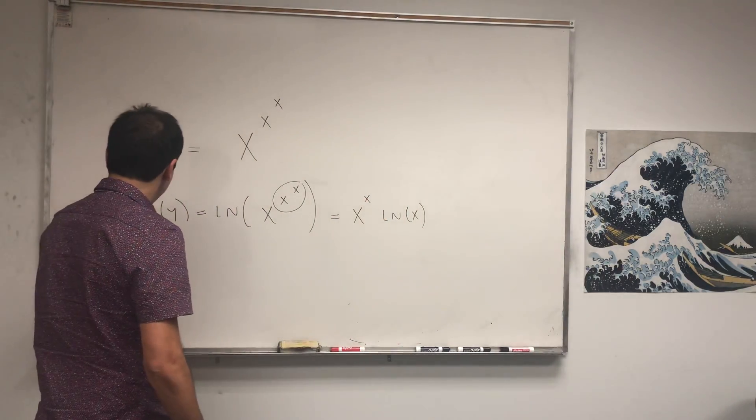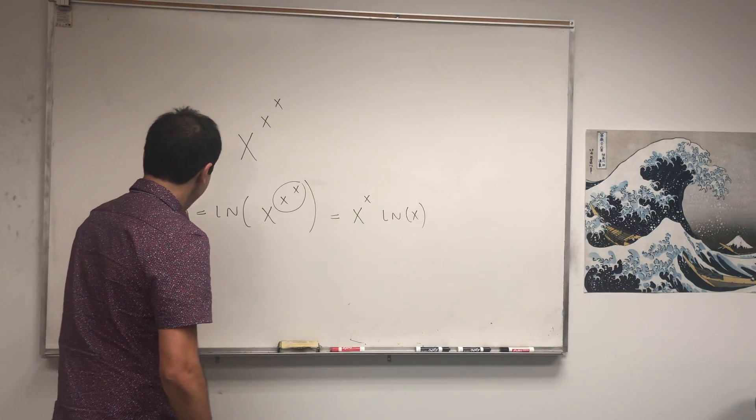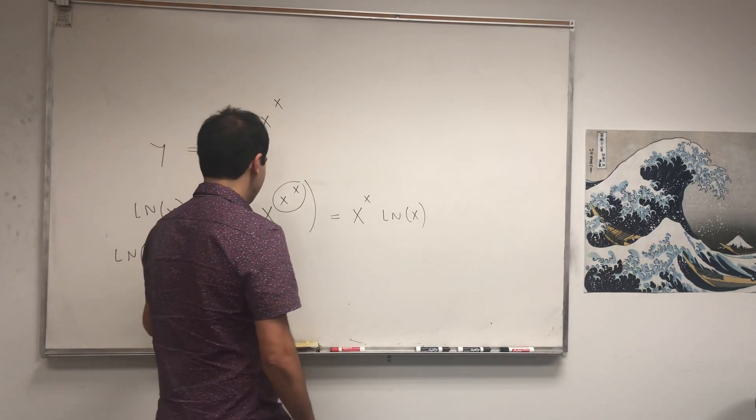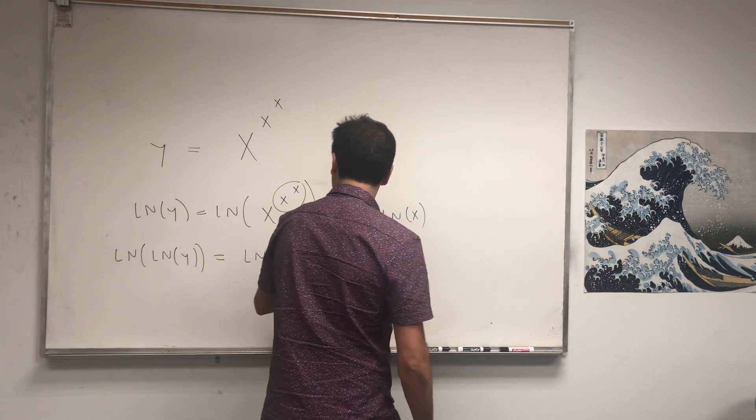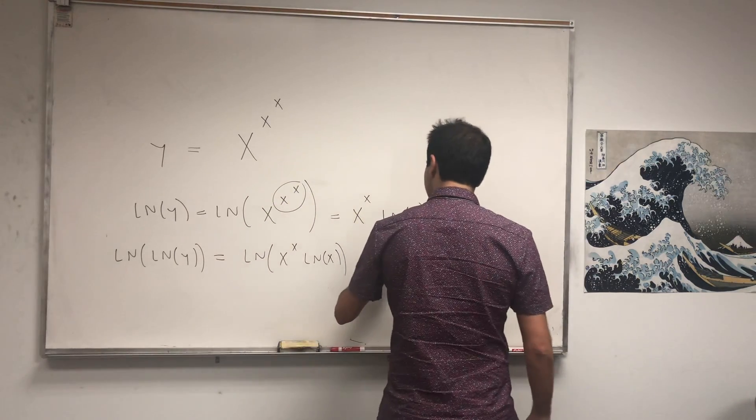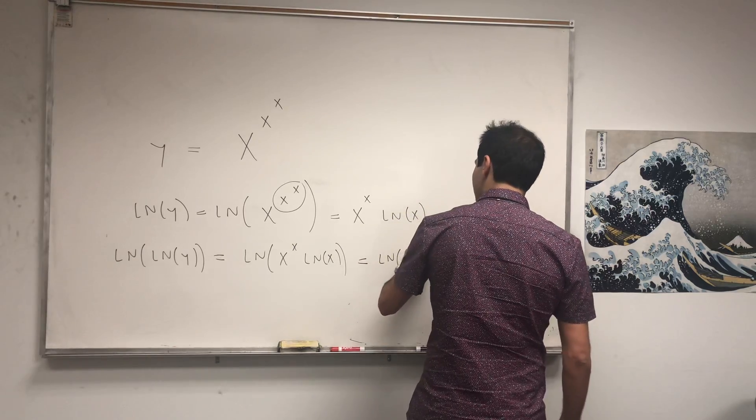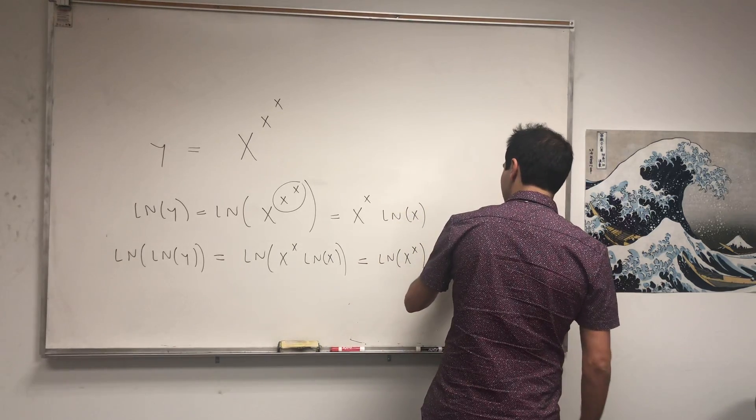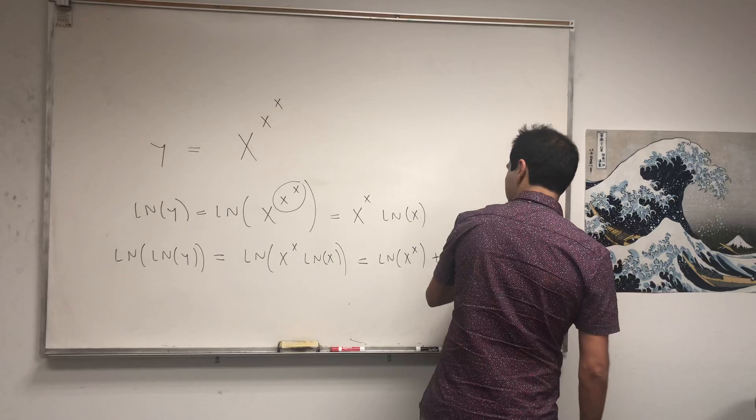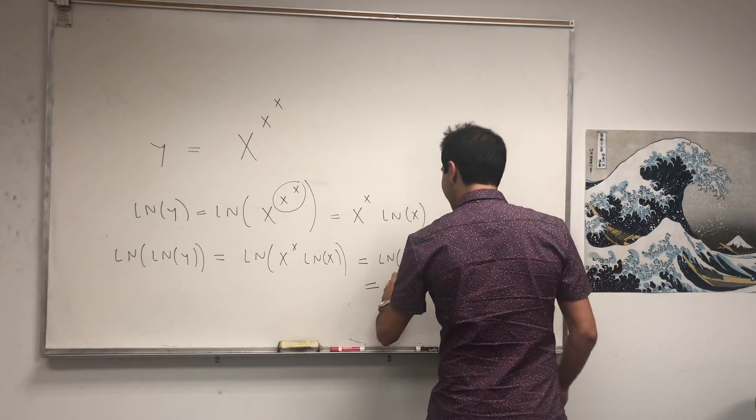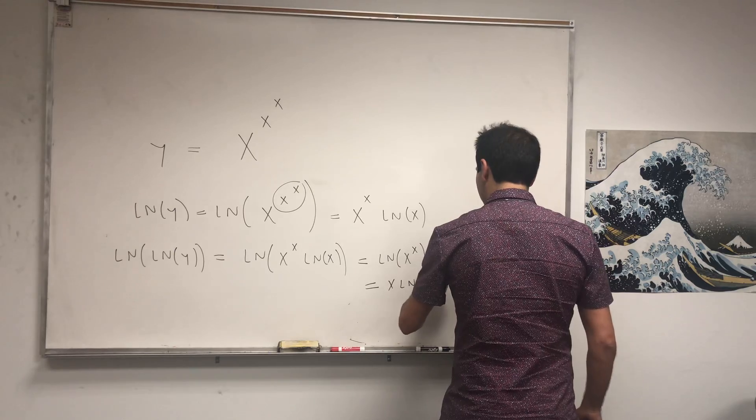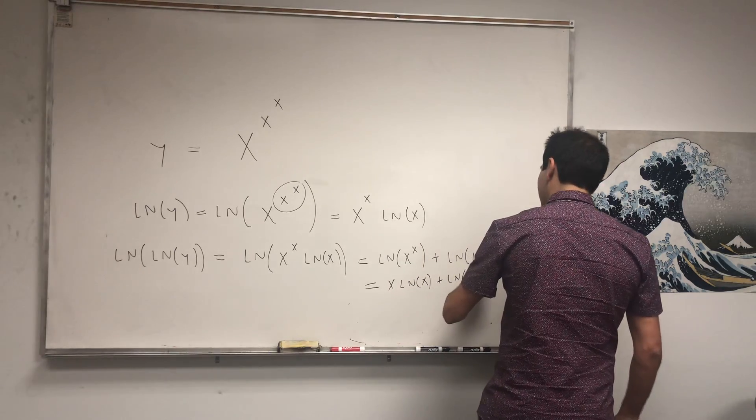So take ln of ln of that. So ln of ln of y, that's ln of x to the x, ln of x. Well, and that's ln of x to the x plus ln of ln of x. And in the end, this becomes x ln of x plus ln of ln of x.